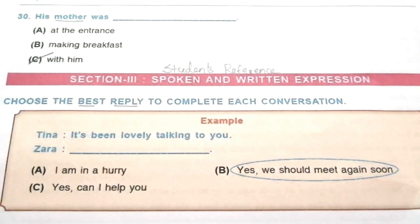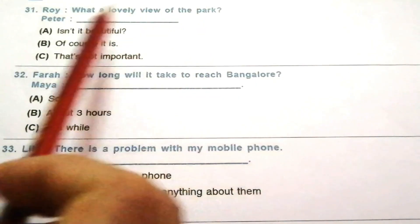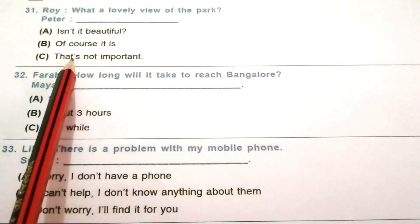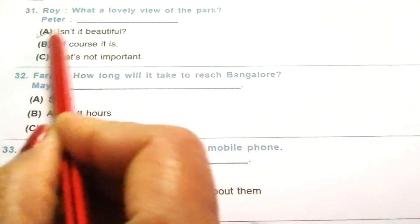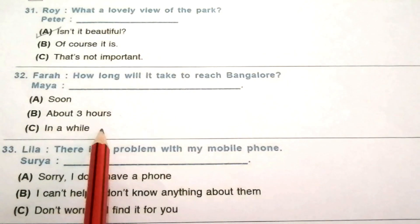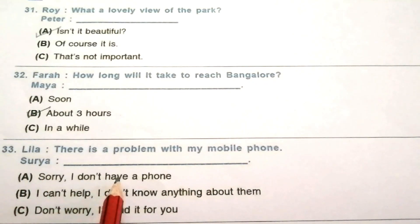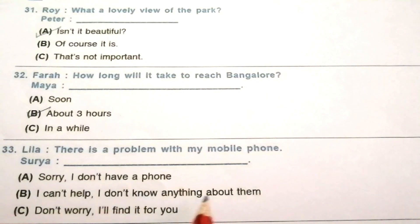Section 3: Spoken and Written Expression. Choose the best reply to complete each conversation. Example — Tina: it's been lovely talking to you. Zara: yes, we should meet again soon. Question 31 — Roy: what a lovely view of the park. Peter: isn't it beautiful? The answer is A. Question 32 — Farah: how long will it take to reach Bangalore? Maya: about 3 hours. The answer is B. Question 33 — Laila: there is a problem with my mobile phone. Surya: sorry, I can't help; I don't know anything about them. The answer is B.